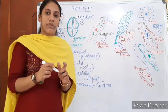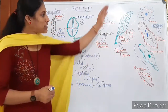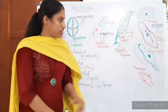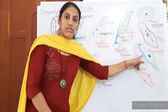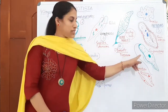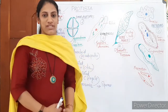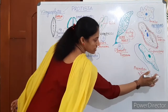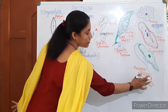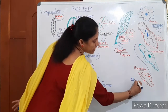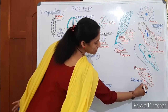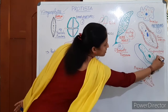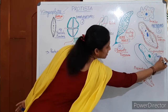The fourth type is Sporozoans. They form highly infectious spores and are pathogenic. Plasmodium, which causes malaria, is an example. Among protozoans, two are infectious to humans: Trypanosoma causes sleeping sickness disease, and Plasmodium causes malaria.